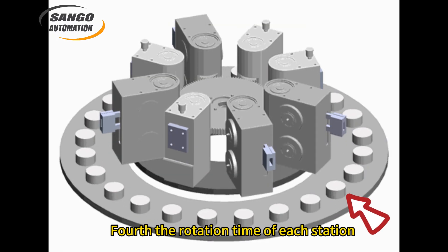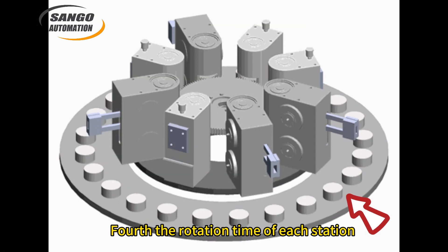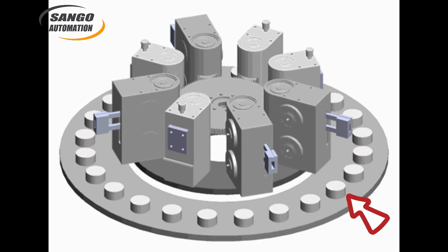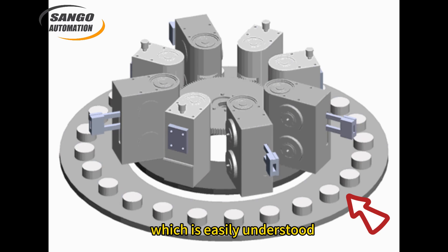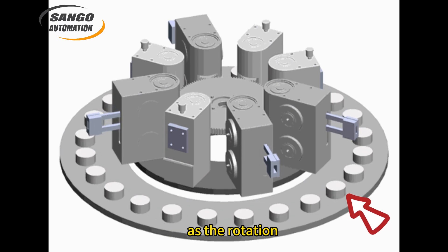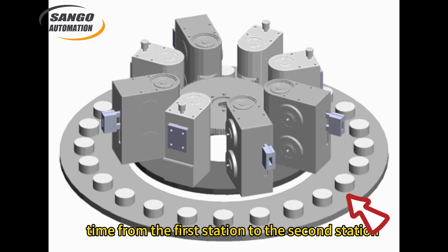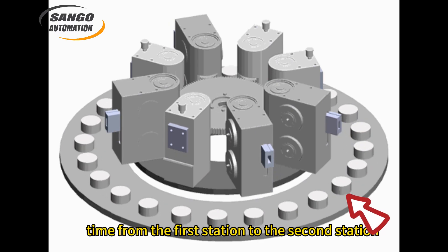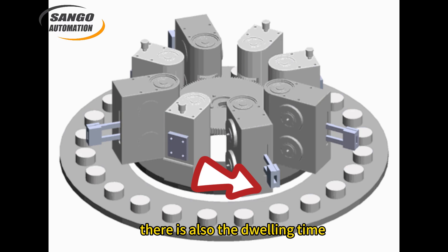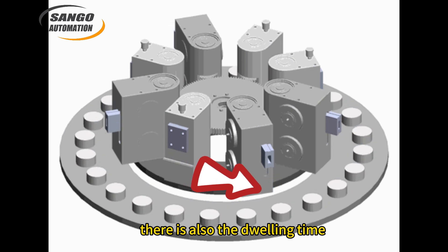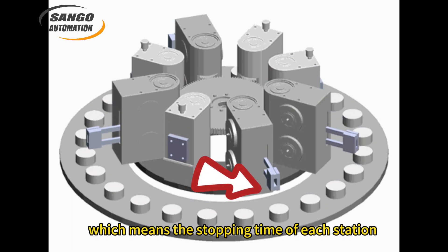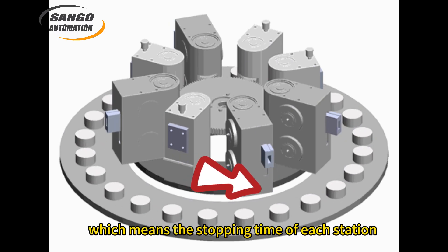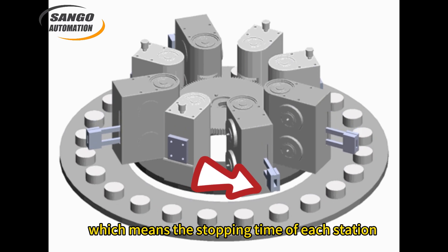Fourth, the rotation time of each station, which is easily understood as the rotation time from the first station to the second station. There is also the dwelling time, which means the stopping time of each station.